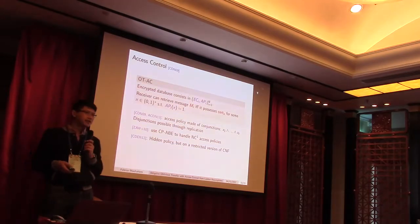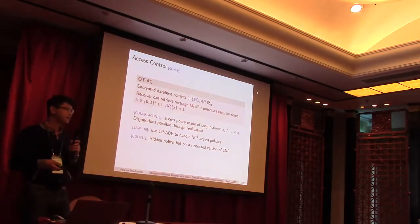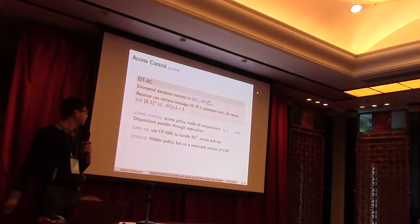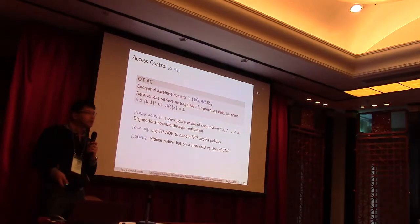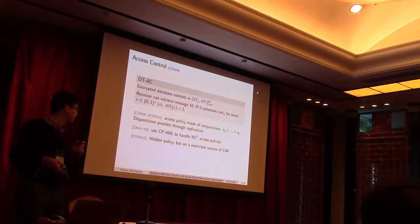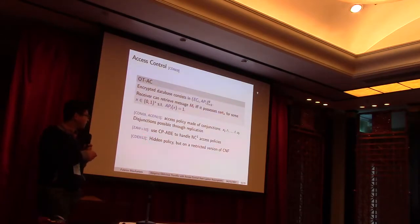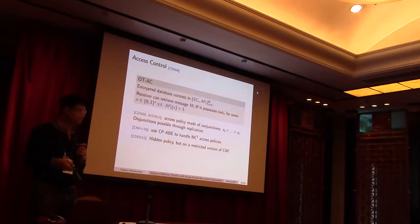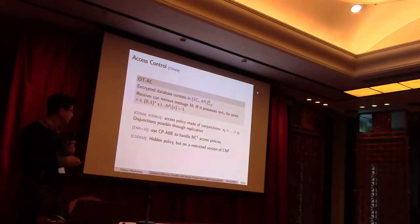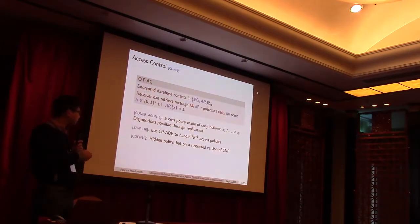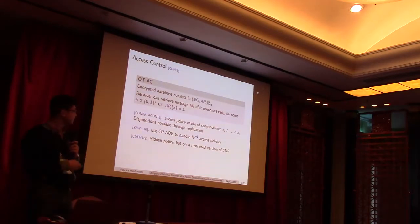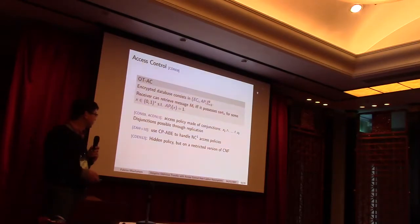So, many works have been done before on this. Some works work only with conjunctions, and then disjunction can be obtained from replications, plus zero-knowledge proof that it's indeed the same message that underlies different access policies. But it's not very efficient in some cases, like for instance, for threshold policies, because there we have many disjunctions, and it may prove useful, for instance, for biometric access or stuff like that.